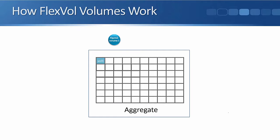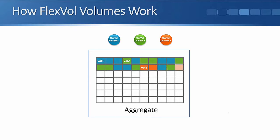Let's consider how our flexible volumes work. In this example, we've got a single aggregate which has three flexible volumes in it. Data ONTAP uses WAFL as the file system — the Write Anywhere File Layout — meaning we don't have any fixed blocks on disk. Whenever a client write request comes in for any volume, it can be written to the next available block; we don't have fixed blocks for those different volumes.